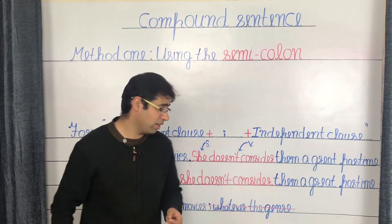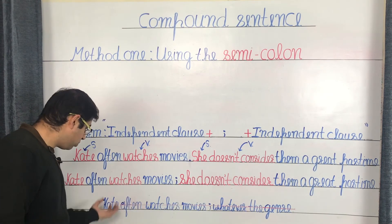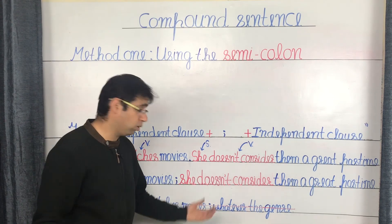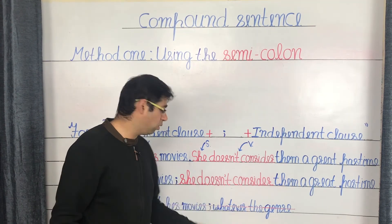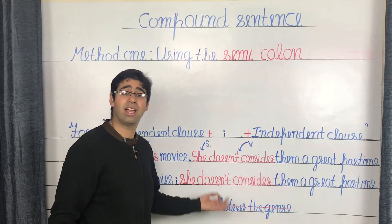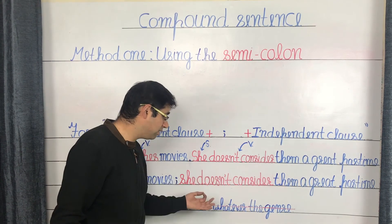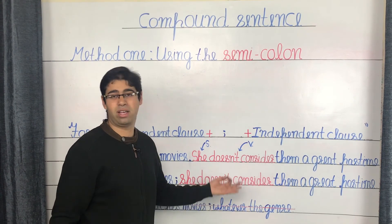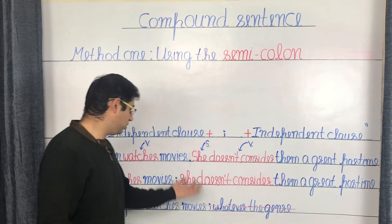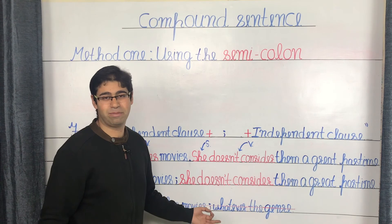Also, please ensure you use the semicolon only to link independent clauses, not phrases or dependent clauses. For example: 'Kate often watches movies; whatever the genre.' Over here, 'whatever the genre' is not a complete independent clause — it is a modifier clause and is missing a verb. Hence, this is a wrong usage of the semicolon.